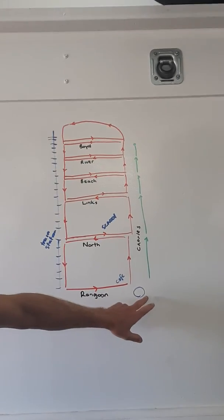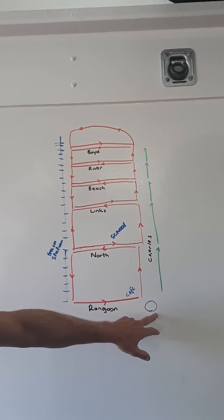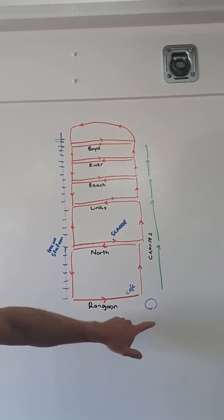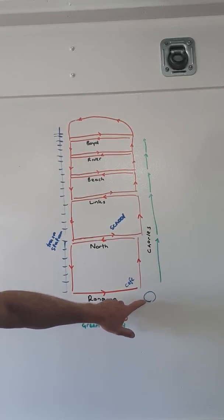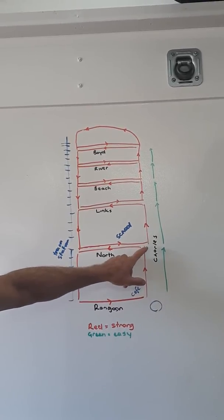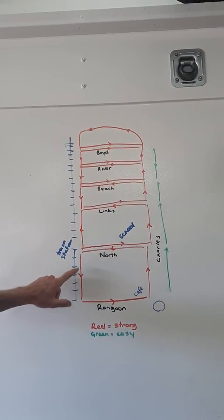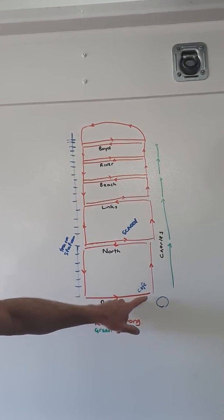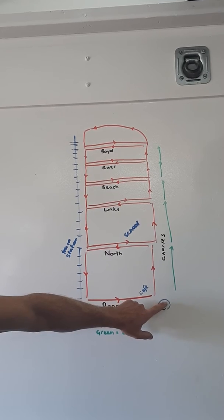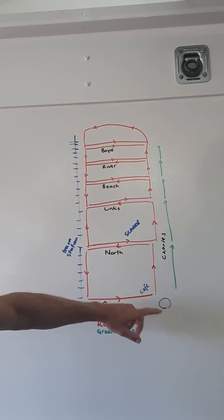This is where we start. This is where you'll do your warm-up. Once you've completed your warm-up, you're going to run strong around our first block. You go up Charles, along North, down Railway, across Rangoon, and then you stop here back at the roundabout where the cafe is.